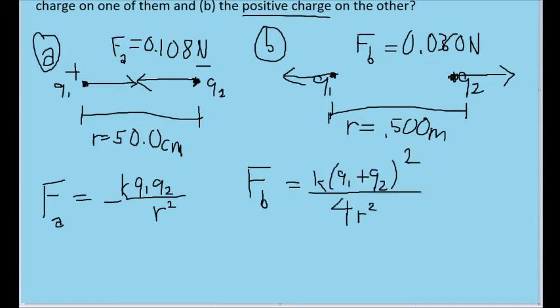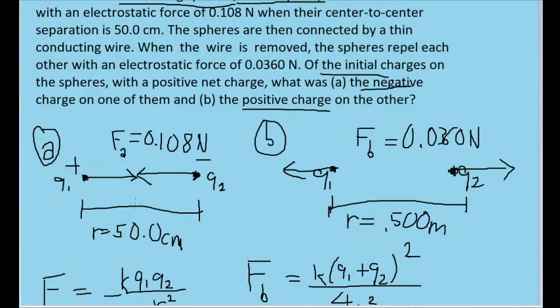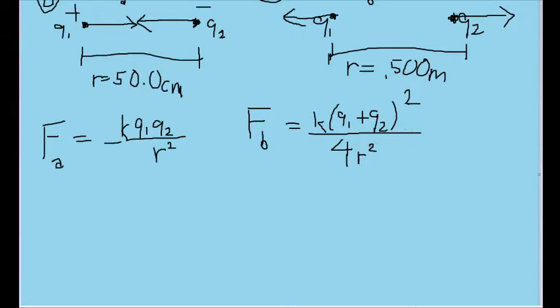So now we have an F sub A where the two charges are multiplied by each other and an F sub B where the two charges are being added to one another. If you're experienced using the quadratic formula, you might be able to see where we're going with this. We have enough values given to us that we can actually solve for these products and sums of the charges. For example, based on the F sub A formula, we can find Q1 times Q2. We multiply R squared by both sides and divide the negative K by both sides as well. So Q1 times Q2 is equal to R squared times F sub A divided by negative K.